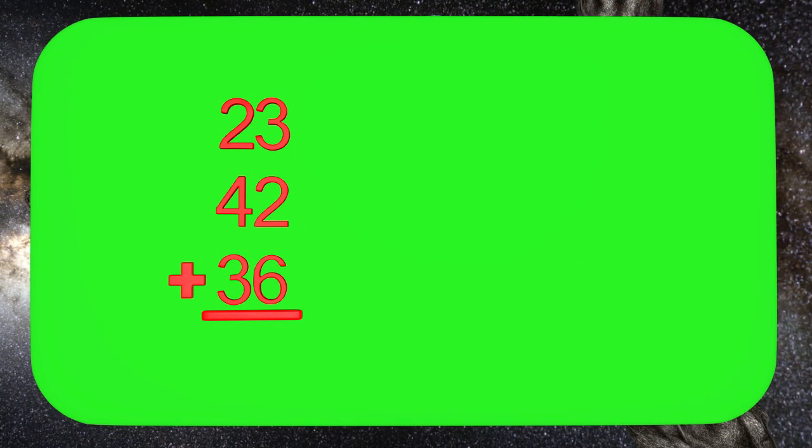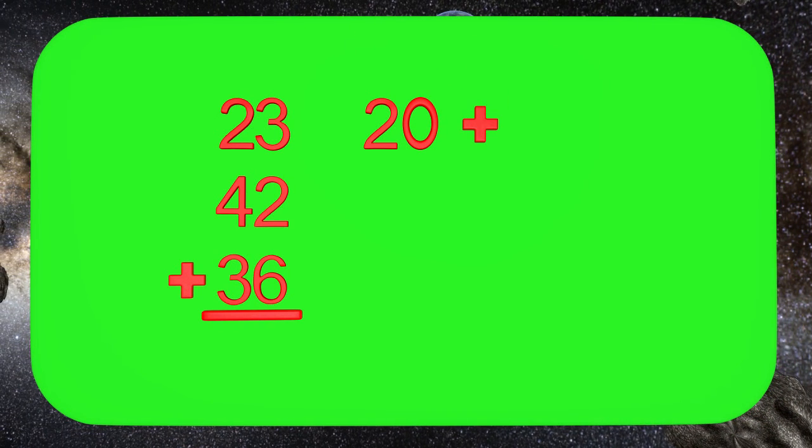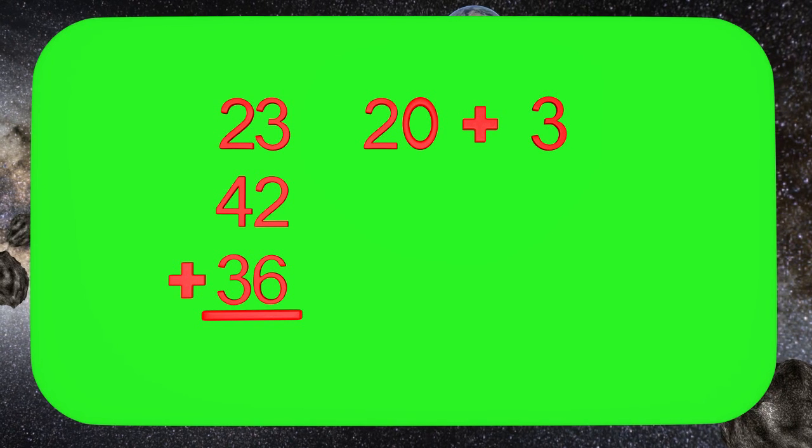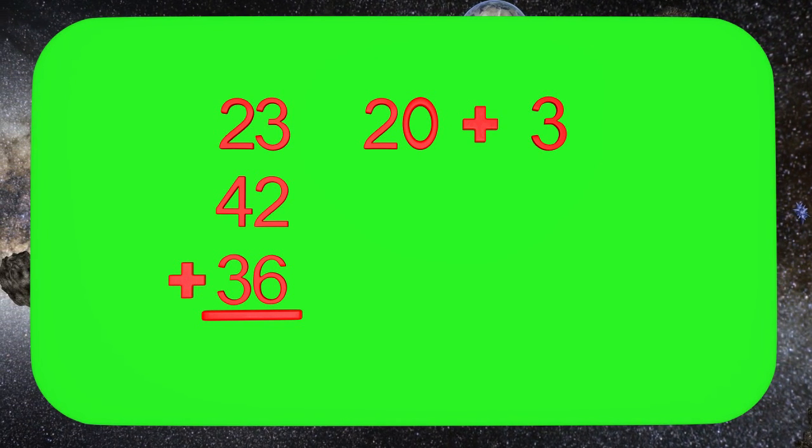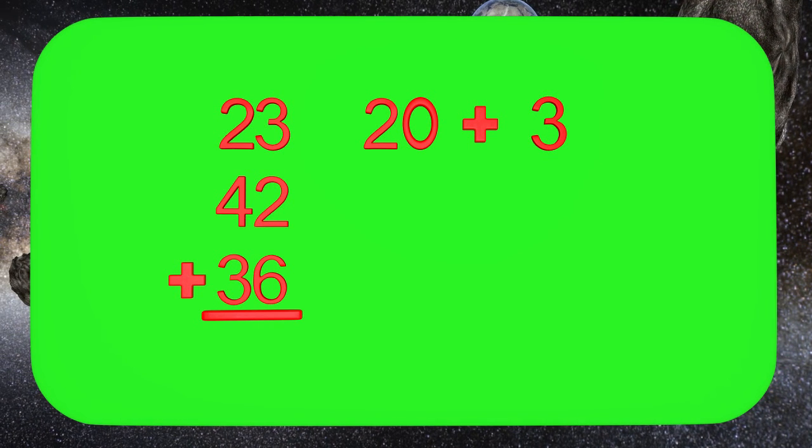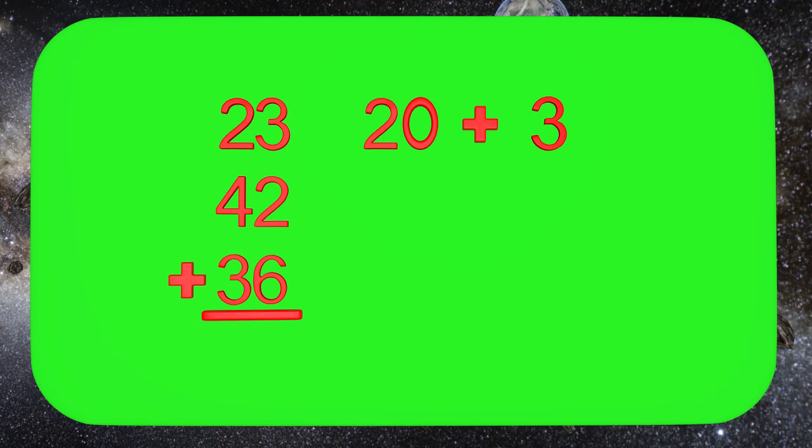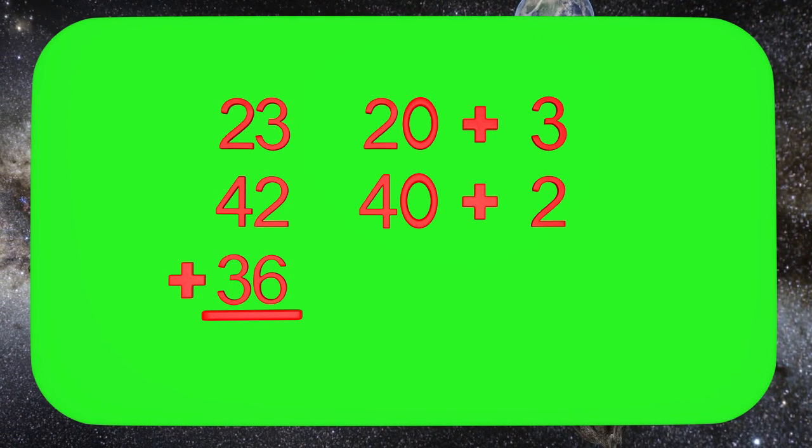Here we have the 23 on top. To break apart the 23, we get 20 plus 3. This now shows the value of each of the digits. Can you tell me what 42 would be in expanded form? 42 in expanded form is 40 plus 2. How about 36?